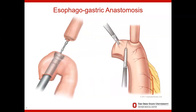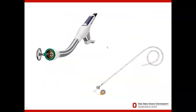The esophagogastric anastomosis is performed with a circular stapler inserted into the stomach and deployed on the greater curvature. An anvil is placed within the esophagus, connected to the circular stapler, then closed and deployed to create a perfect esophagogastric anastomosis. The excess stomach is then removed with the linear stapler. Shown here are the circular stapler and the anvil used to perform the anastomosis.